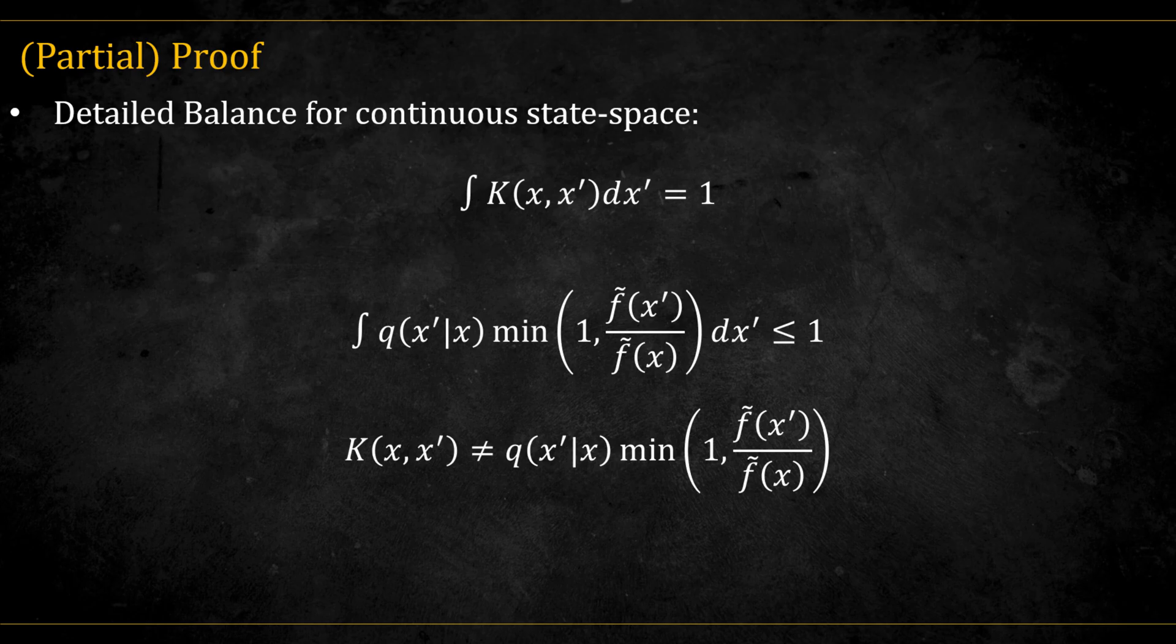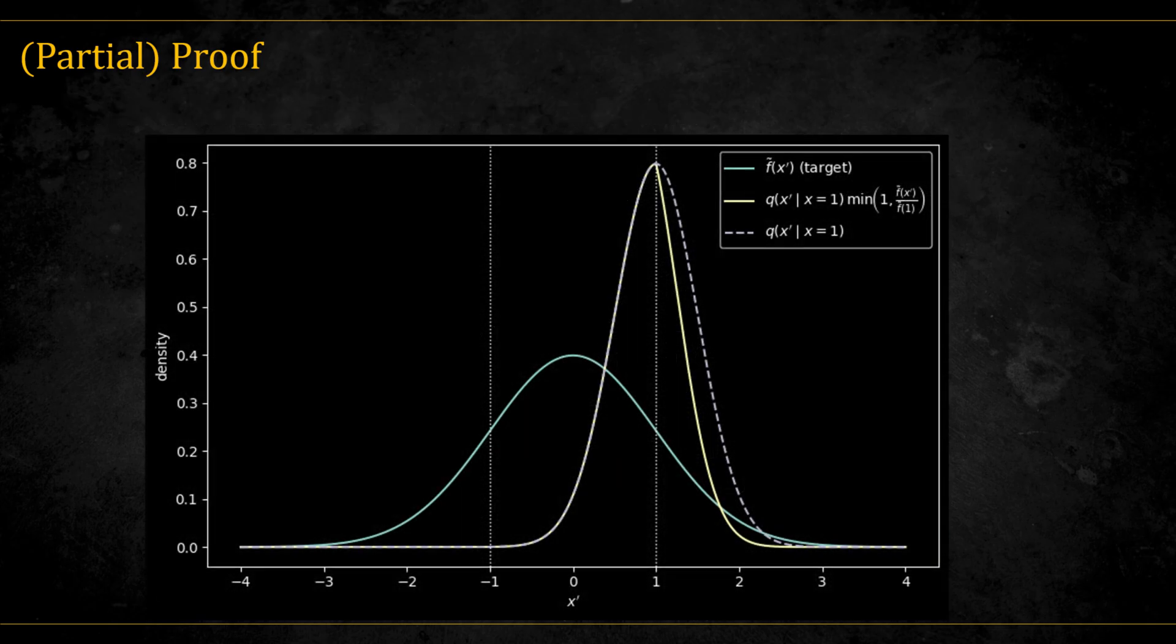This is true if we look at the discrete space, but in the continuous space, actually the kernel is not equal to this. Why? Well, a kernel must have the property that the probability of getting into all other states is equal to 1. Think of it as the sum of each row must sum up to 1 in the discrete case. Here we are multiplying a valid pdf q by some fraction, so obviously it's not going to be equal to 1.